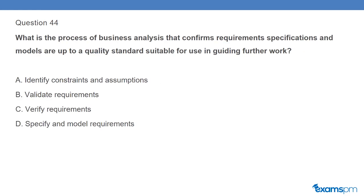Question 44: What is the process of business analysis that confirms requirement specifications and models are up to a quality standard suitable for use in guiding further work? A. Identify constraints and assumptions. B. Validate requirements. C. Verify requirements. D. Specify and model requirements.